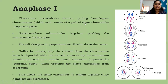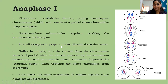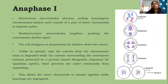In anaphase one, the kinetochore microtubules shorten, pulling the homologous chromosomes — each consisting of a pair of sister chromatids — to opposite poles. The non-kinetochore microtubules lengthen and push the centrosomes farther apart, elongating the cell in preparation for division. Unlike in mitosis, only the cohesin from the chromosome arms is degraded, while cohesin surrounding the centromere is protected by a protein named shugoshin — meaning 'guardian spirit' in Japanese — which prevents sister chromatids from separating, allowing them to remain together while the homologues separate.